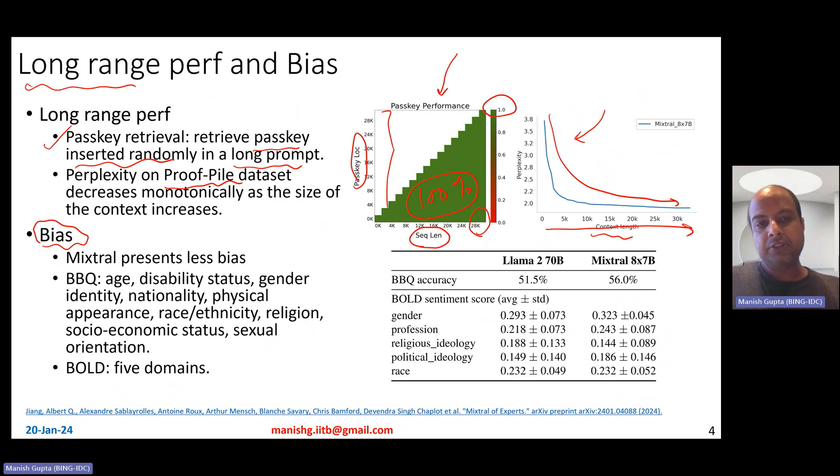Now, how biased are the outputs from Mixtral model? To measure that, they measure it in comparison with Llama 2 70 billion, and to measure that they actually make use of two data sets, BBQ data set and BOLD sentiment score. Higher scores indicate lesser bias. Higher scores or higher accuracy indicates lesser bias. BBQ data set measures this accuracy across nine different ways of bias like age, disability status, gender, nationality, physical appearance, race, ethnicity, religion, socioeconomic status, and so on. In comparison, the BOLD sentiment score data set takes care of five different domains like gender, profession, religion, political ideology, and so on. And what you observe is that Mixtral actually is better compared to Llama on all of these bias benchmarks. So lower bias, not just good performance, but lower bias as well.